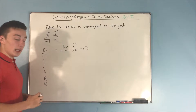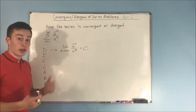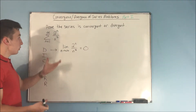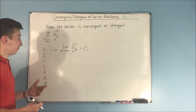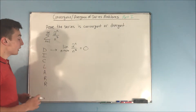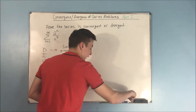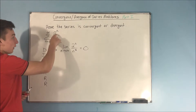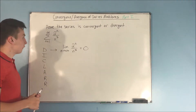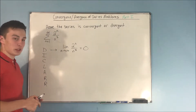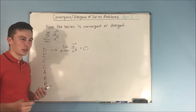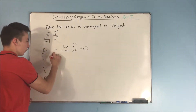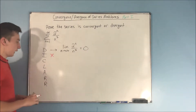Now what about the integral test — our I? Could we do some kind of integral here? The reason that's not going to work is because you're not going to be able to integrate the integral from 1 to infinity of 2 to the x over x cubed. That doesn't seem like something we can integrate, so we're going to put an X there and move on.